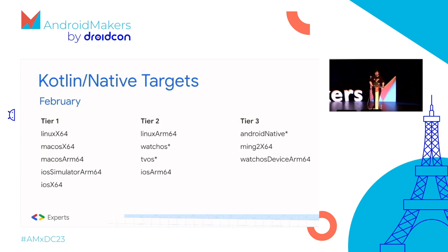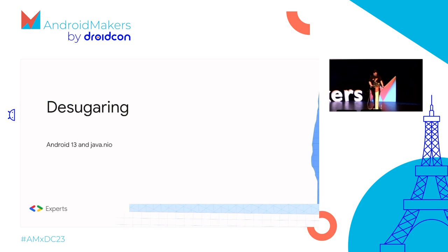JetBrains updated their Kotlin native target support tiers, acknowledging that some targets were exotic from early experiments and not manageable to keep supported. They dropped some deprecated targets — mostly 32-bit or x86 platforms — to be removed in Kotlin 1.9. The chuggering: Google released a new version of the API desugaring based on Android 13 and Java 11 language APIs. Desugaring allows you to use later Java API versions in earlier versions of Android, since Android has its own runtime — Dalvik or ART.